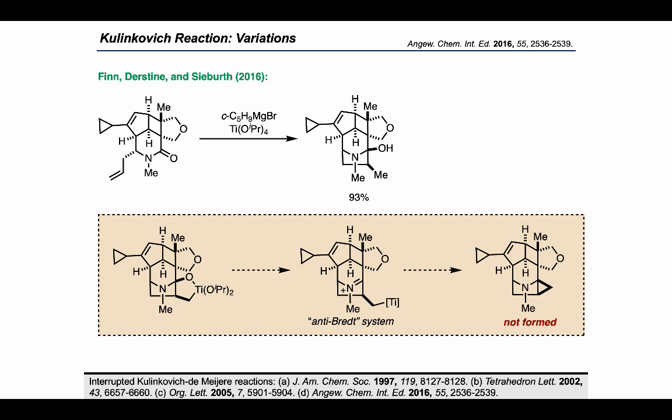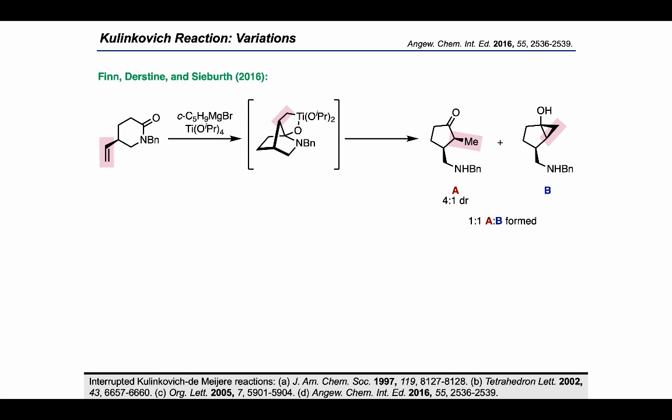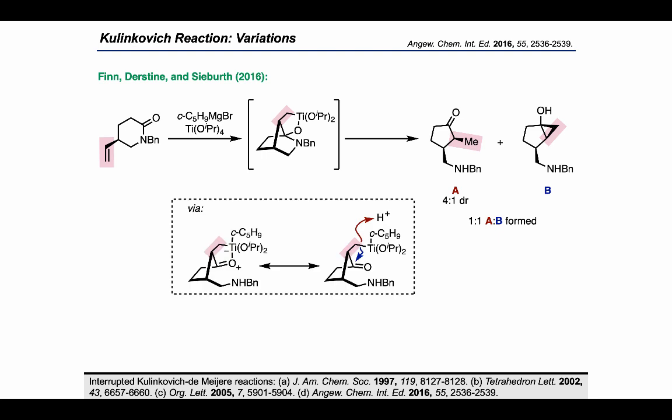Instead, the observed product can be understood as being derived directly from the oxatitanacyclopentane intermediate. In another system, the same authors show that with a different lactam bearing a terminal alkene, the same reagent combination can generate an oxatitanacyclopentane intermediate, which leads to the formation of two products, A and B, with 4-to-1 diastereoselectivity in the former case. These divergent reactivity paths emerge through a common oxatitanacyclopentane complex, which can either lead to protonation via the red arrow to form A, or carbon-carbon bond formation via the blue arrow to form the cyclopropane B.